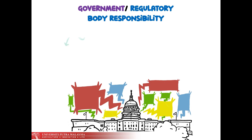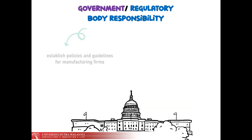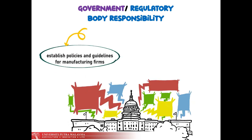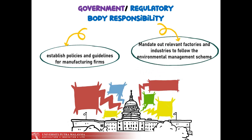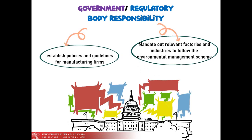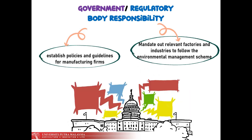And the last one is government or regulatory body, where they should establish policies and guidelines for manufacturing firms to ensure that the goods produced comply with the ISO, and mandate relevant factories and industries to follow the environmental management scheme based on ISO 14000 within one year from the date of commencement of operations.